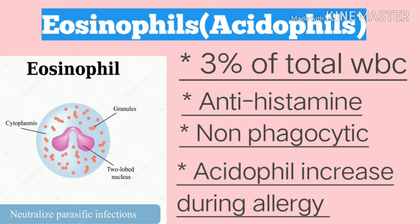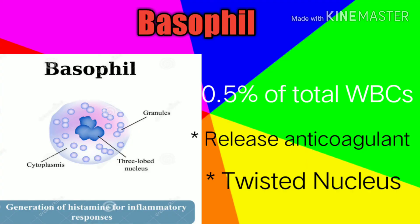Eosinophils consist of 3 percent of total WBCs. They show anti-histamine and non-phagocytic properties. Eosinophils increase during allergic reactions and help neutralize parasitic infections.